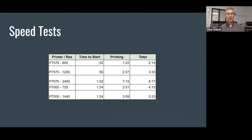Here's some data for you. What's worth comparing is the P7570 versus the P7000. P7570 at 600 DPI is comparable to the P7000 at 720 DPI, and I broke the printing into two bits. One is the time to start, which is when I hit print from Photoshop to when the print head starts moving, and then the second part is when the print head starts moving to when it's done.